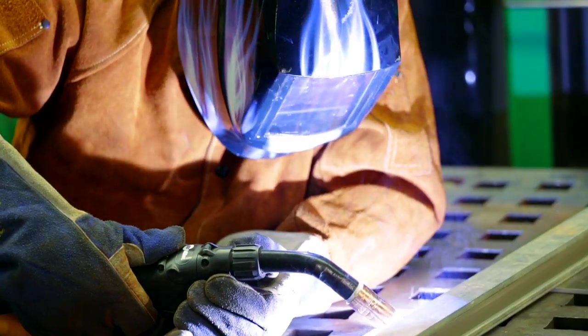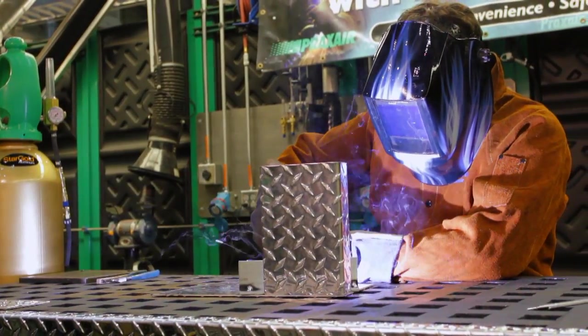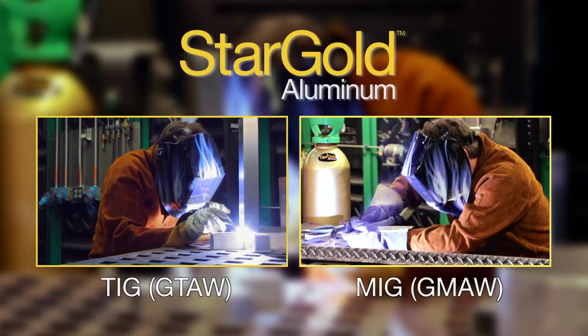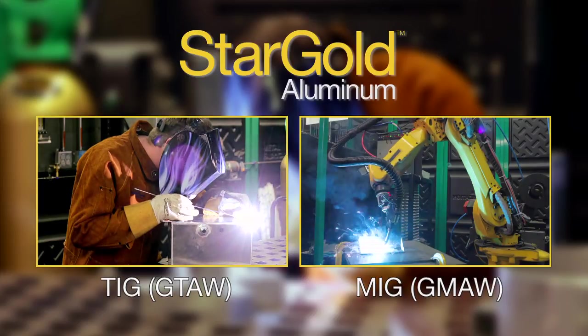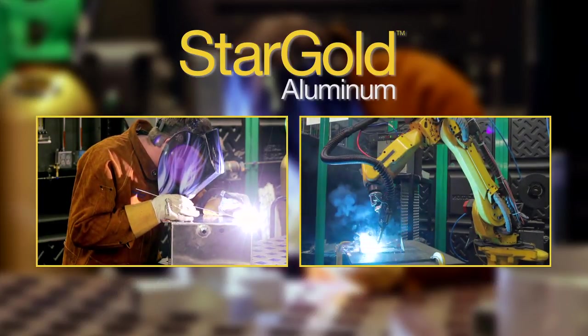Praxair's Stargold Aluminum shielding gas can provide increased arc stability and improved weld penetration to fabricators using aluminum alloys when compared with pure argon shielding gas. This blend also offers process flexibility as it can be used with TIG and MIG using either conventional or pulsed spray transfer in all welding positions.